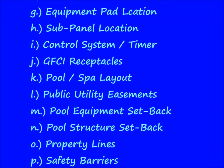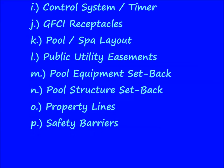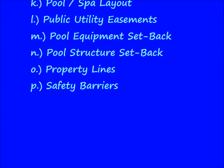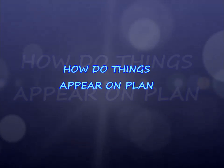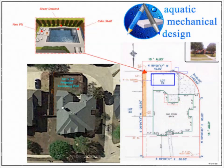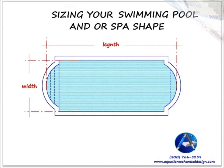GFCI receptacle locations, pool and spa dimensional layout, public utility easements, pool equipment setbacks, pool structure setbacks, property lines, and safety barriers. These elements will be scaled to the official property plot plan's dimensional layout and corresponding to a satellite overview and street view of the property.